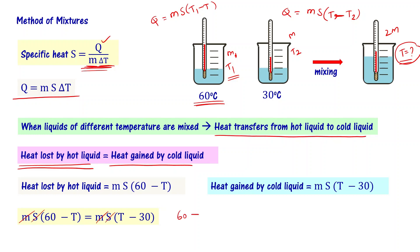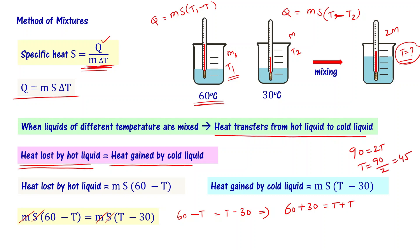We said heat lost equals heat gained, so M times S times (60 minus T) equals M times S times (T minus 30). Cancelling M and S from both sides: 60 minus T equals T minus 30. Rearranging: 60 plus 30 equals T plus T, that is 90 equals 2T. Therefore T equals 90 divided by 2, which is 45. So the final temperature of the mixture is 45 degrees centigrade.